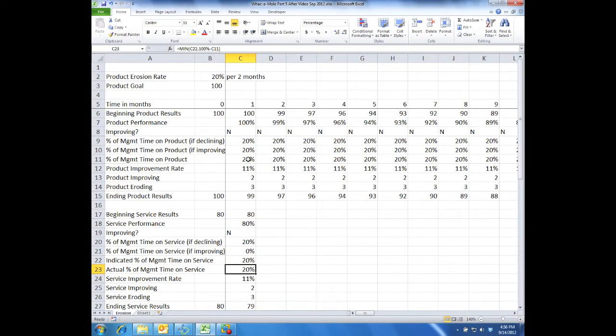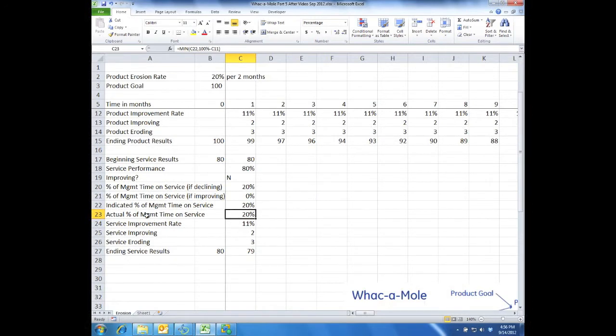So basically, it might be indicated you should spend 80% of your time on service, but if there's only 20% left of you, you take the 100% minus what you're spending on the product and that's all you have left. So essentially that's what that formula means. Now I've got to link it to the actual one, to the indicated one. And that should be it believe it or not, let's take a look.